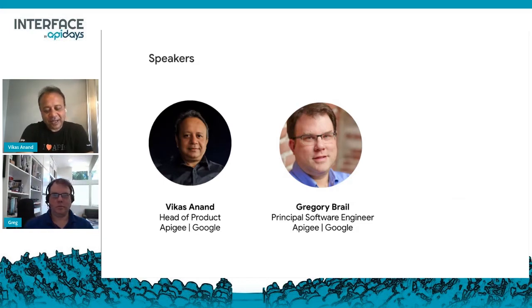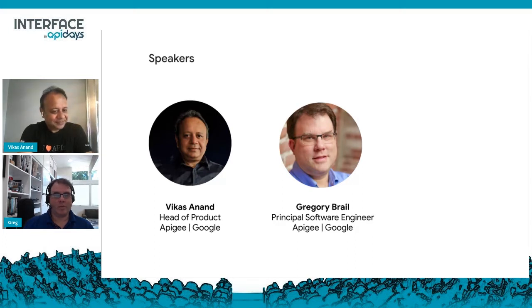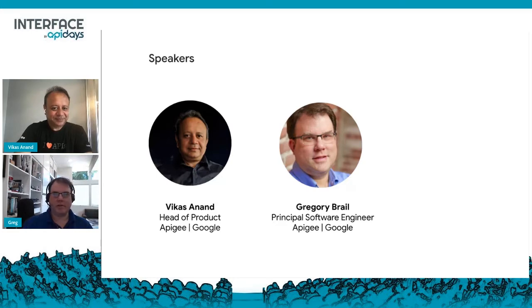My name is Vikas Anand, I'm Head of Product for Apigee at Google. Joining me today is Greg — Greg, do you want to introduce yourself? I'm Greg Brail, I work on the Apigee team. I lead the architecture of the Apigee products and have done that for a very long time.